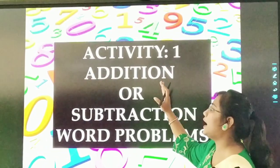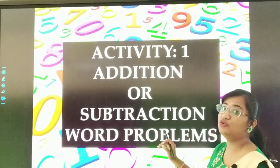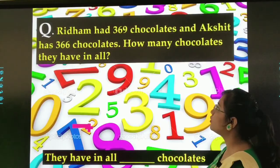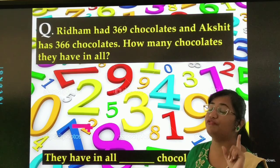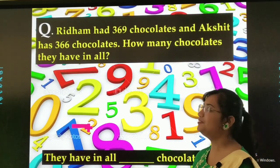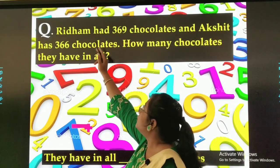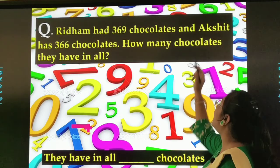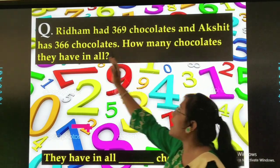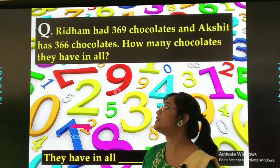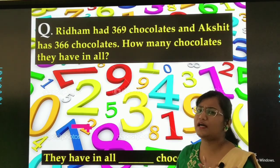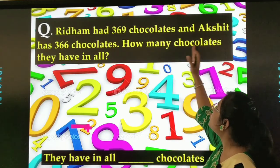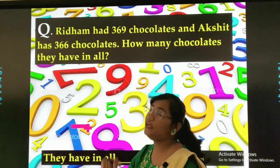Activity 1: Addition or subtraction word problems. Read the question very carefully. Rhythm has 369 chocolates and Akshir has 366 chocolates. How many chocolates do they have in all?